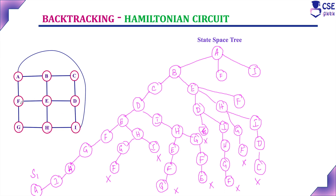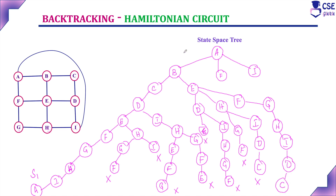Considering E to F: from F, the unvisited vertex is G; from G, the unvisited vertex is H; from H, E is already visited, so the unvisited vertex is I; from I, the unvisited vertex is D; from D, the unvisited vertex is C. All vertices have been visited exactly only once, but from C you cannot return back to A. So this is also a dead end.